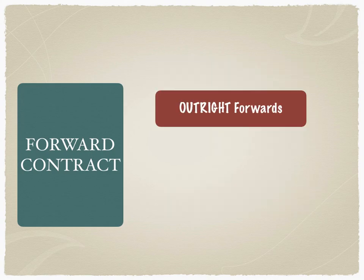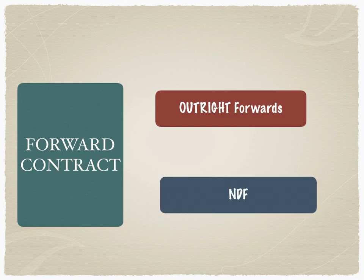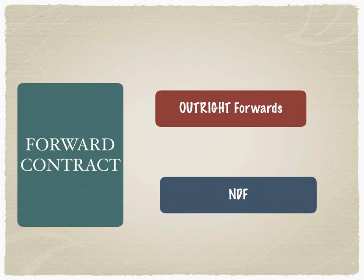Forward contracts can be further classified into two categories. The first is outright forwards, where there is an actual settlement — an exchange of currency for currency. On the other hand, if it's an NDF — a non-deliverable forward — there is no exchange of currencies. The profits are calculated and the loser pays the gainer the profit amount. This settlement most often takes place in the base currency, which in most cases is the USD. So in a non-deliverable forward, there is no actual physical exchange of currency for currency.